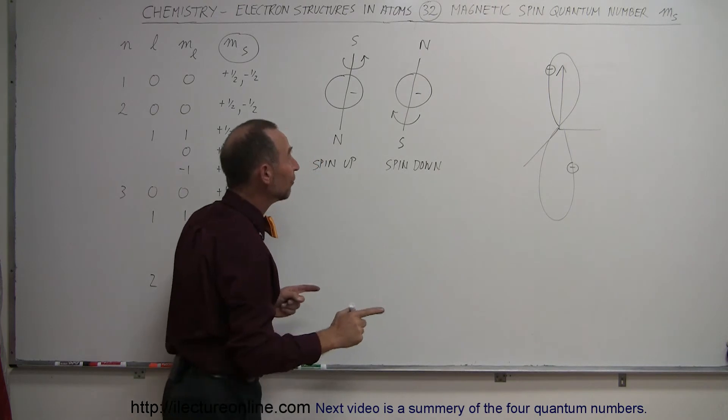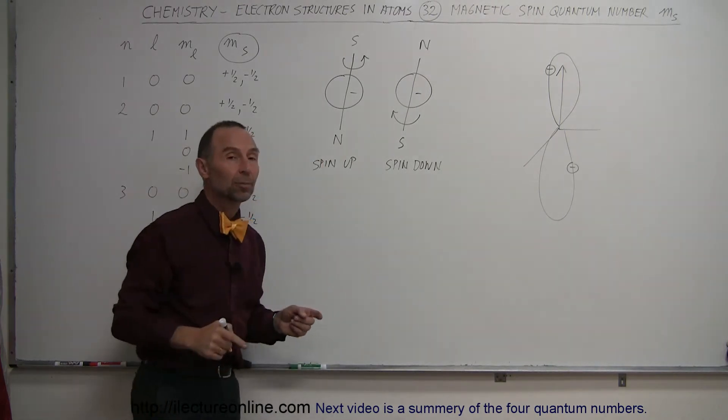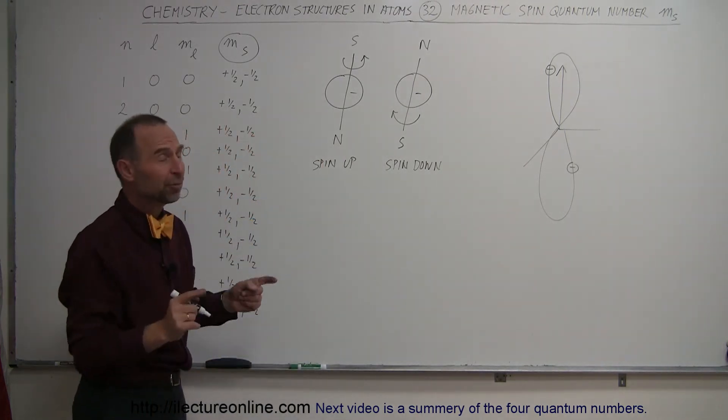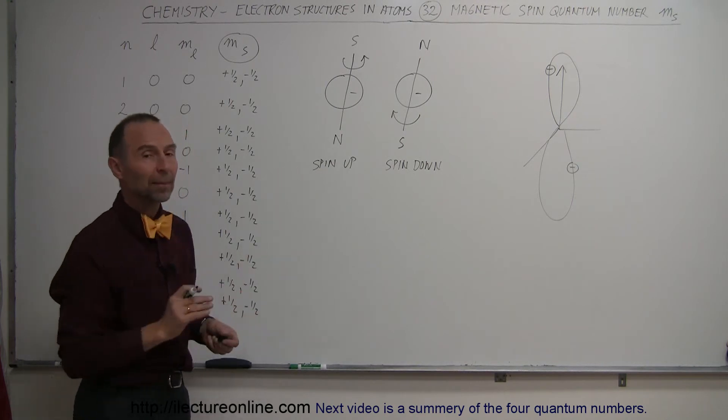only if one is spin up and the other one is spin down. If they're both spin up or both spin down, they could not exist at the same time in the same orbital.